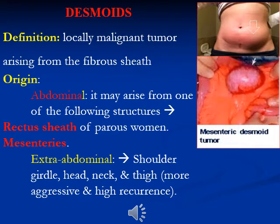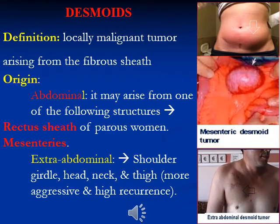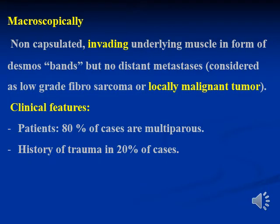Extra-abdominal sites include the shoulder girdle, head, neck, and thigh, which are more aggressive and have a higher recurrence rate. Macroscopically, they are generally non-capsulated, invading the underlying muscles in the form of bands — 'desmos' being the Latin word for bands. However, there is no distant metastasis, so it is considered a low-grade fibrosarcoma or locally malignant tumor.